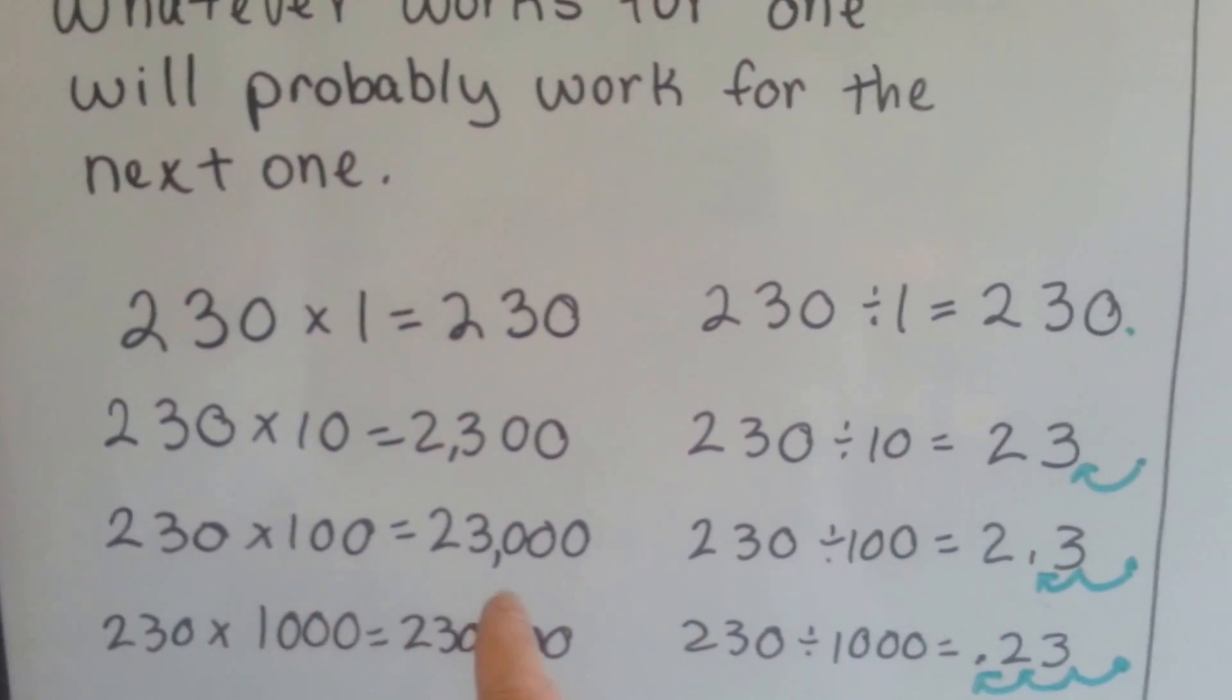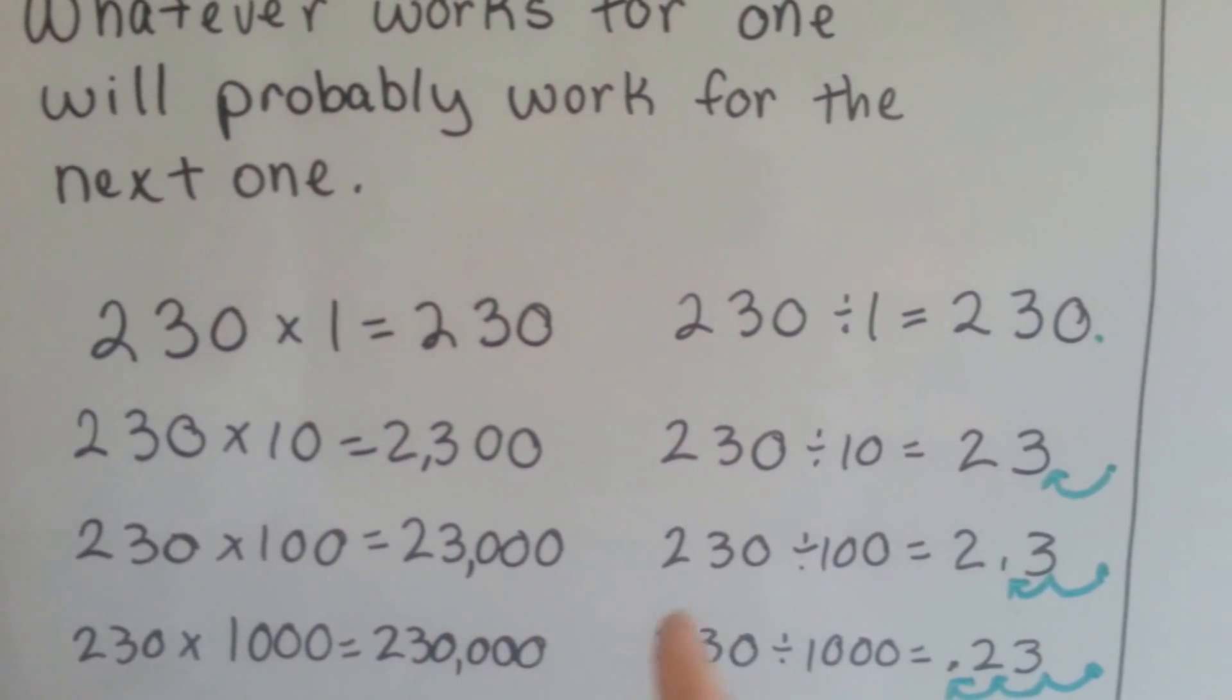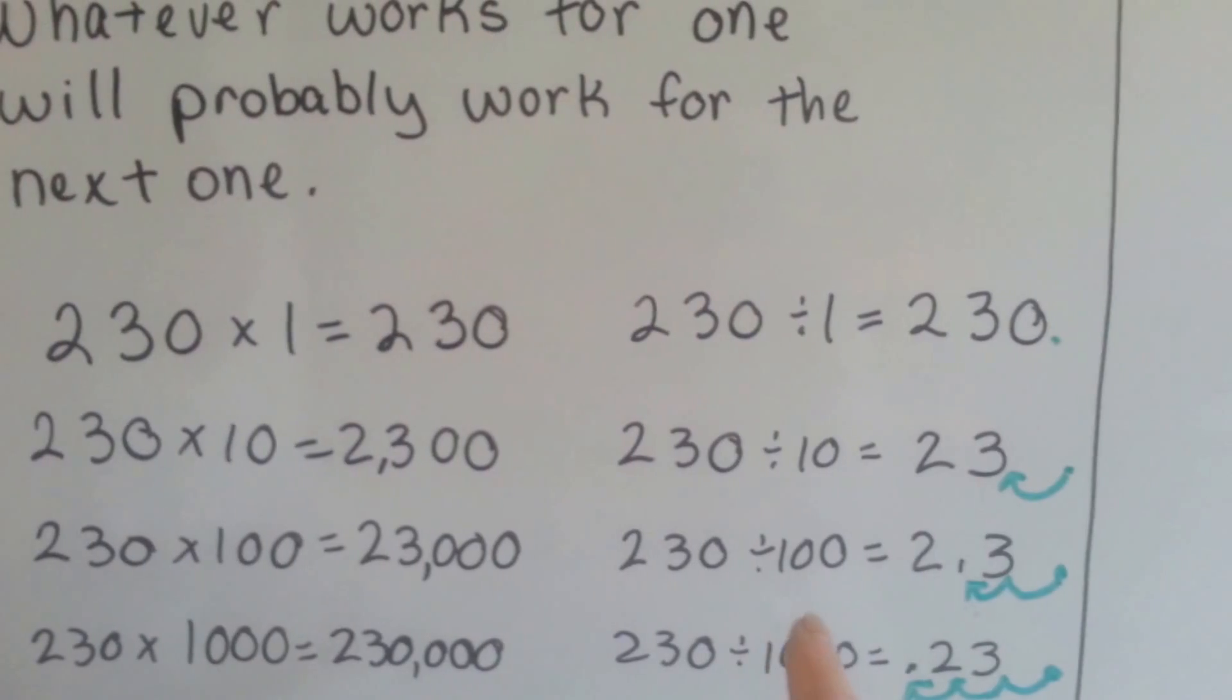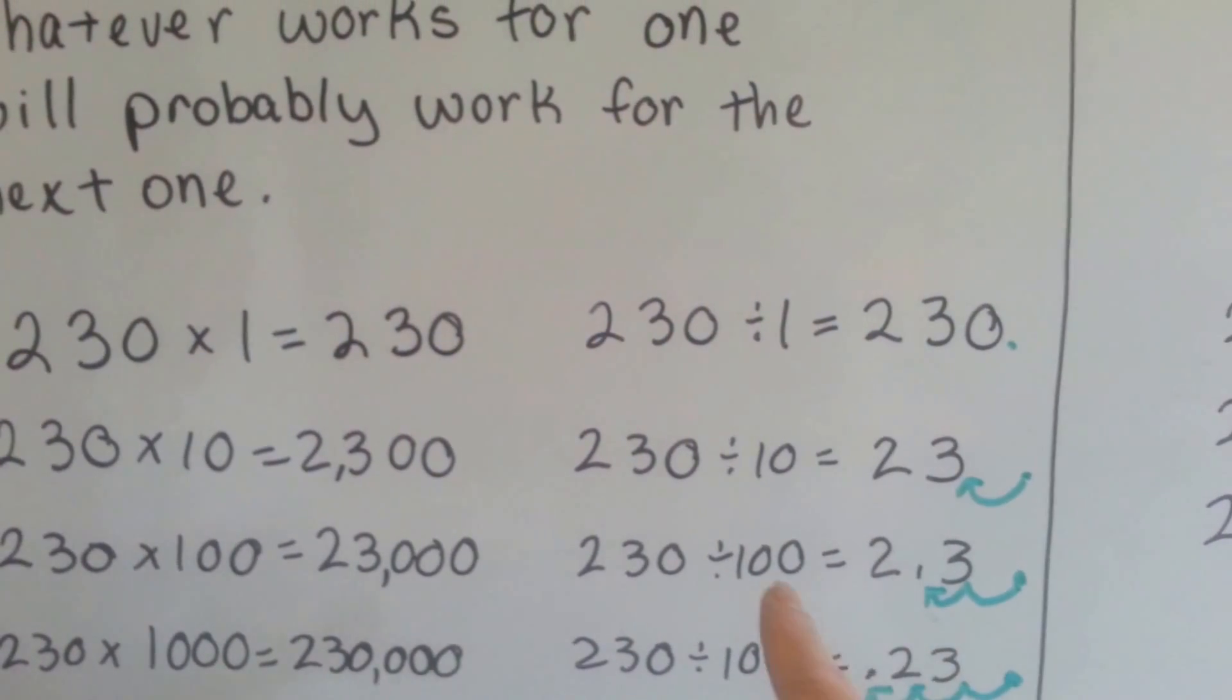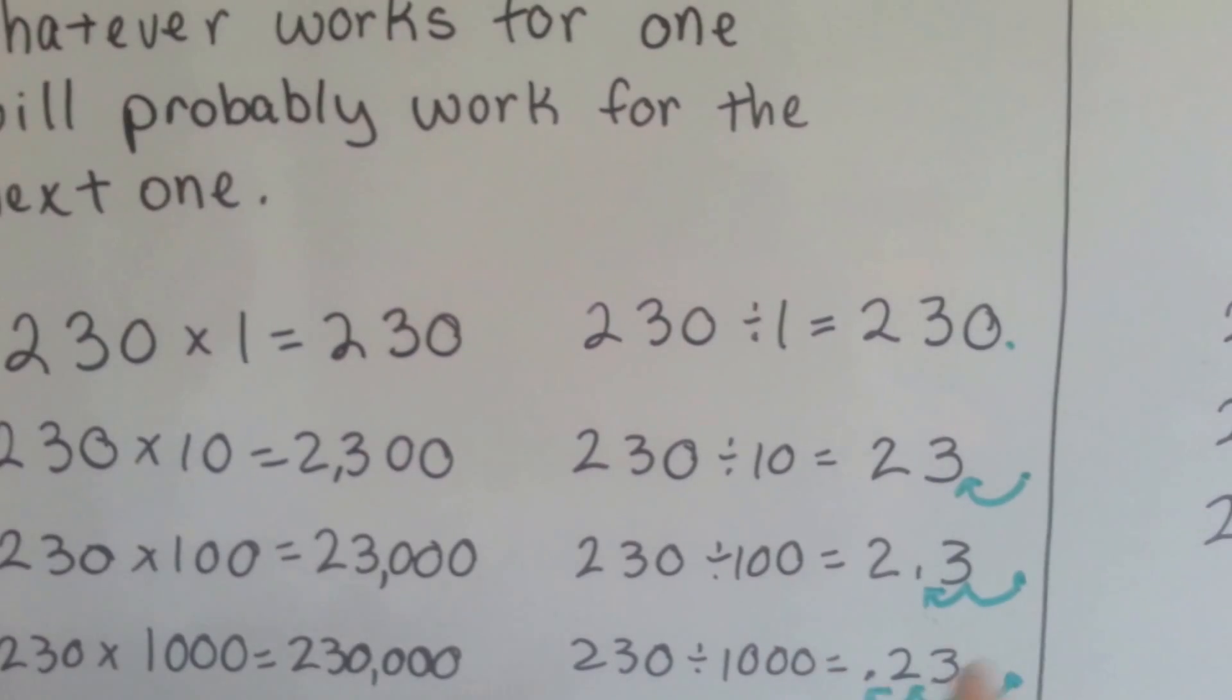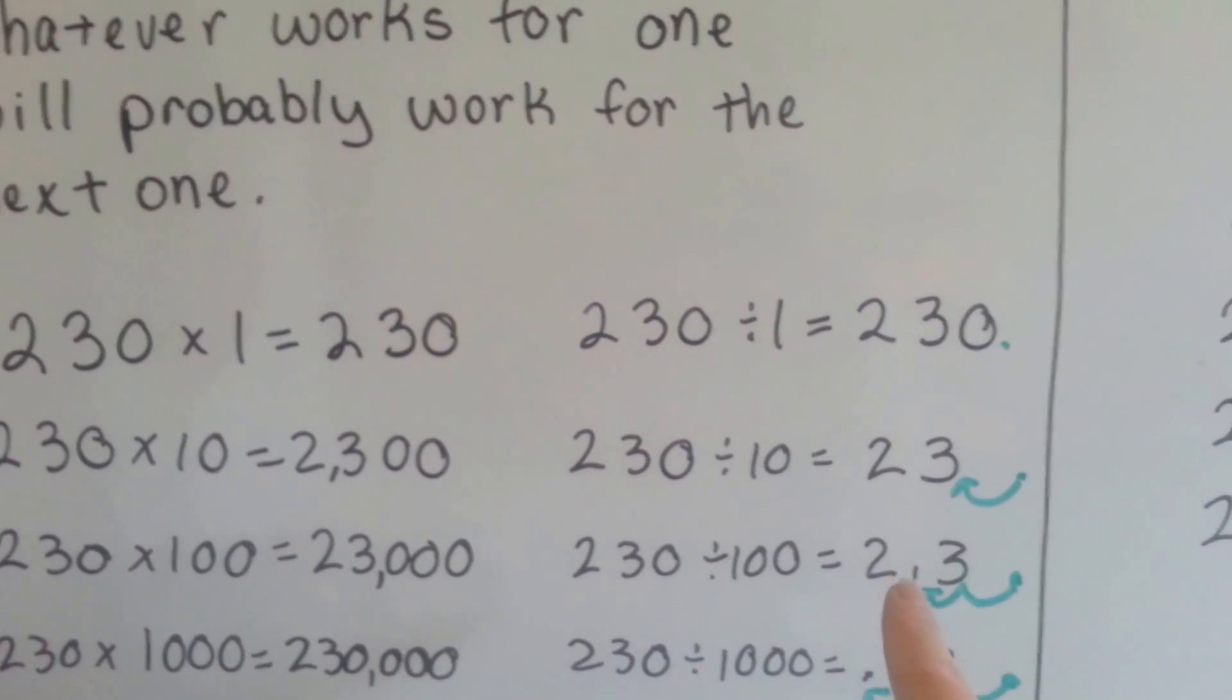230 times 100 is 23,000. 230 divided by 100 is 2 and 3 tenths. Now that we took away the two 0's, we're taking away two decimal points, see?